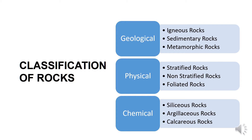Classification of rocks are of three types: geological classification, physical classification, and chemical classification. Geological classification includes igneous rocks, sedimentary rocks, and metamorphic rocks. Physical classification includes stratified rocks, non-stratified or unstratified rocks, and foliated rocks. Chemical classification includes siliceous rocks, argillaceous rocks, and calcareous rocks.